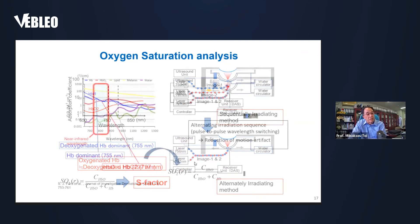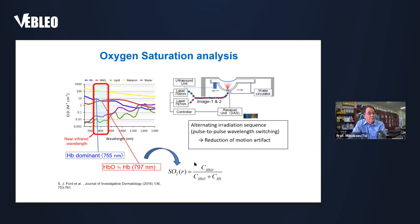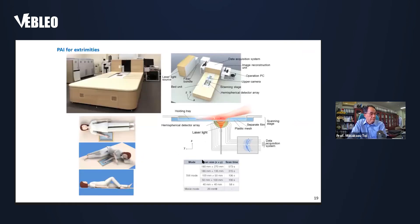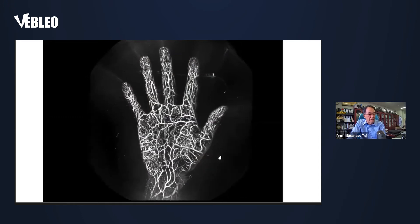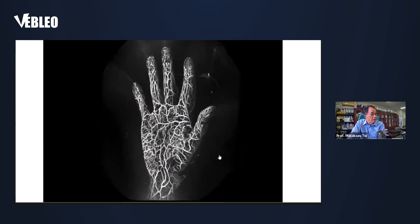Each tissue of our body shows a specific light absorption spectrum, as shown in the left graph. By using wavelengths around 800 nanometers, which matches light absorption of deoxygenated and oxygenated hemoglobin in the near-infrared wavelength range, absorption in water and lipid is low. This is the wide field machine. The upper or lower extremities are possible to examine. This is a typical example of the vasculature of the hand, visualized with this wide field machine.